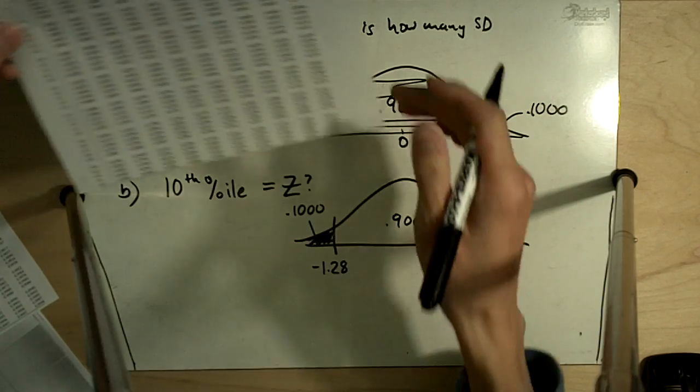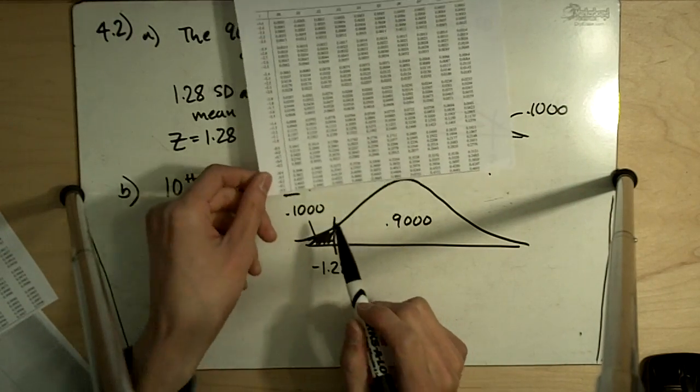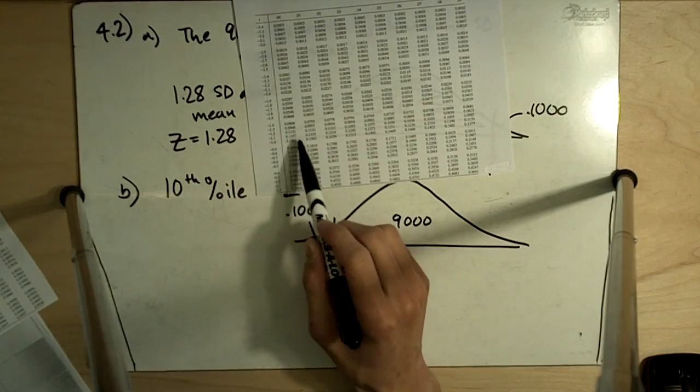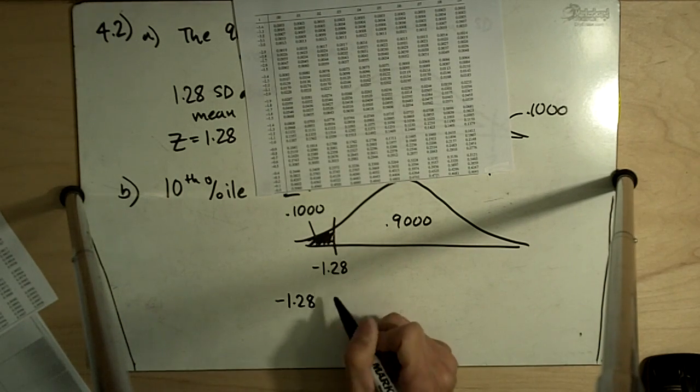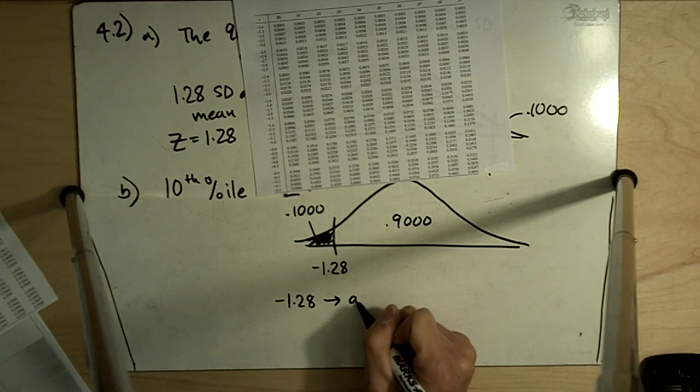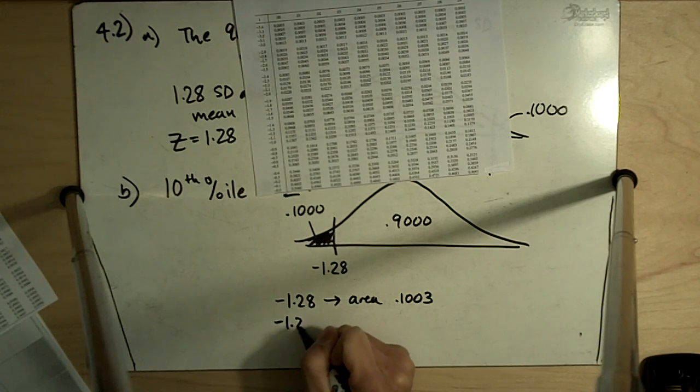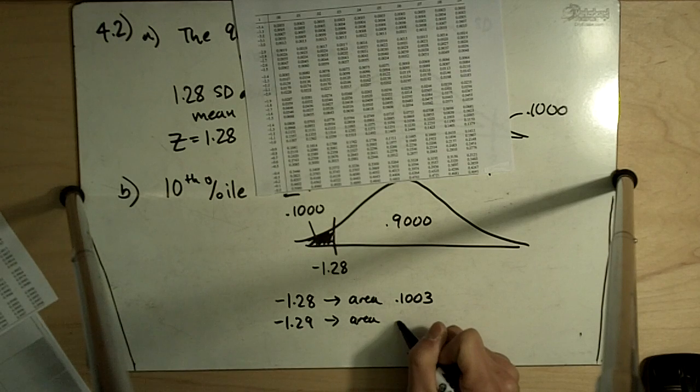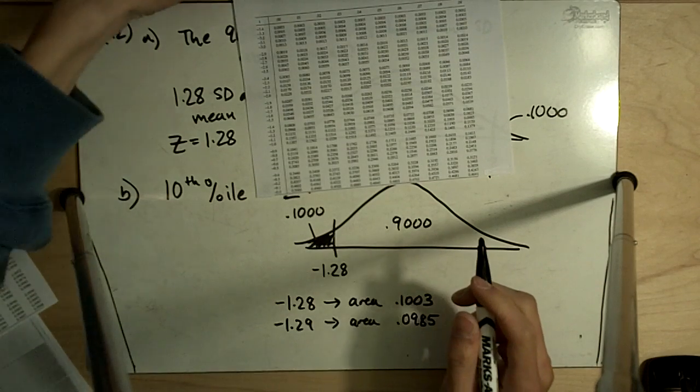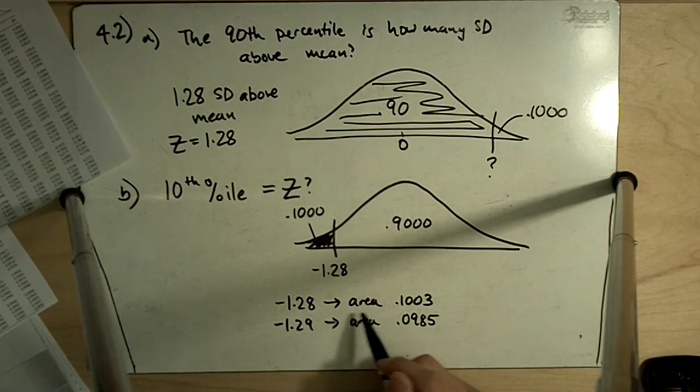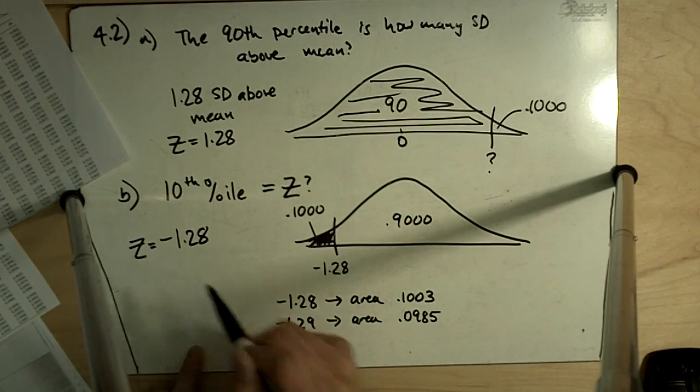But if you verify with the table, if you try to find 0.1000 in our table, indeed, we find the two closest values are going to be negative 1.28, which corresponds to an area of 0.1003, and negative 1.29, which corresponds to an area of 0.0985. The one that's closer is negative 1.28. So our answer here is Z equals negative 1.28.